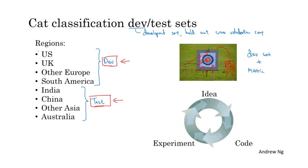To avoid this, what I recommend instead is that you take all this data but randomly shuffle the data into the dev and test sets, so that both the dev and test sets have data from all eight regions and that the dev and test sets really come from the same distribution, which is the distribution of all of your data mixed together.